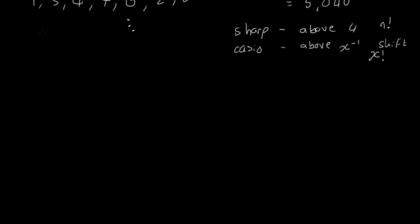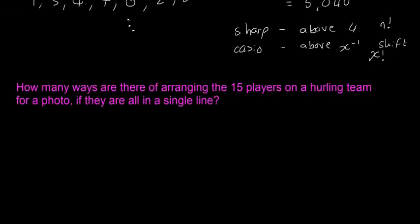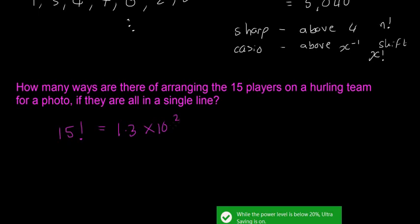Second example: how many ways are there of arranging 15 players on a hurling team for a photo if they're all in a single line? Again, there are no restrictions here, so we can just use the factorial button on the calculator. It's an obscenely big number: 1.3 × 10^12, which is far too big to write out all the different numbers.